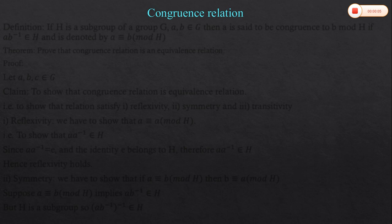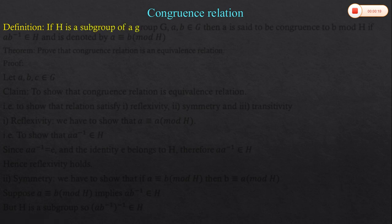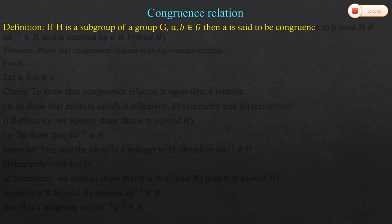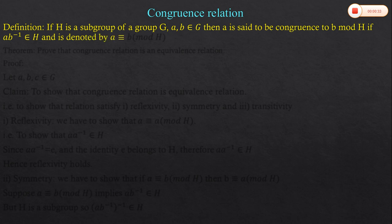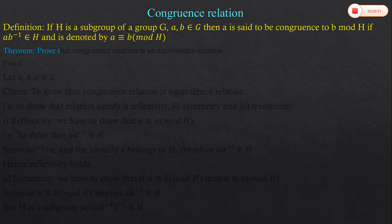We will see congruence relation in group theory. First, we will see the definition: if H is a subgroup of a group G, consider two elements a and b in G. Then element a is said to be congruent to b modulo H if a into b inverse belongs to H. This is denoted by a ≡ b (mod H).